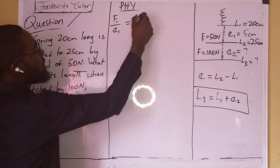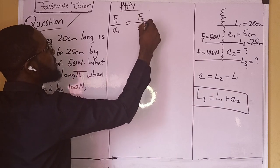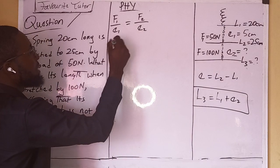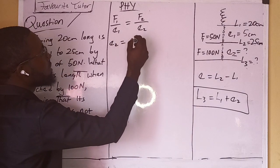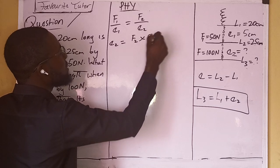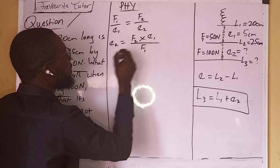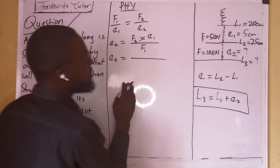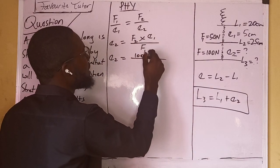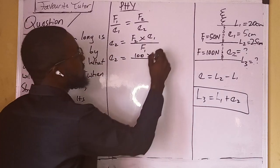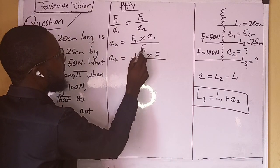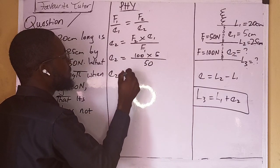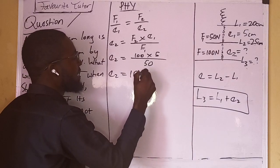From the equation F1 over E1 equals F2 over E2, we can solve for extension two. Extension two equals F2 times E1 divided by F1. F2 is 100, E1 is 5, and F1 is 50. So extension two equals 100 times 5 divided by 50, which gives us 10 centimeters.